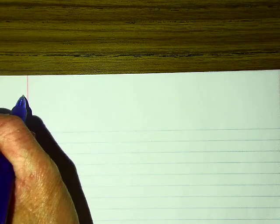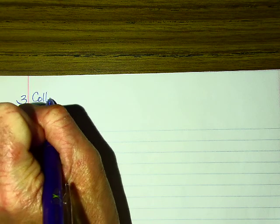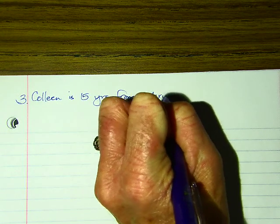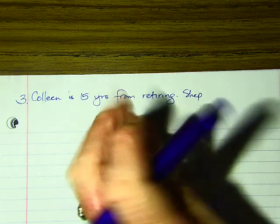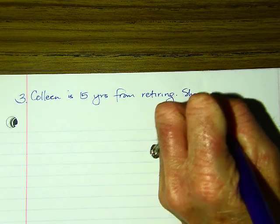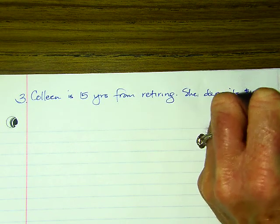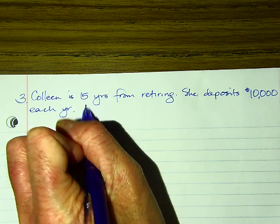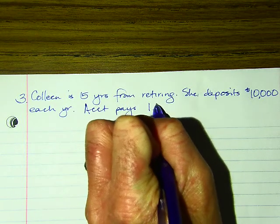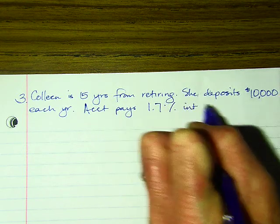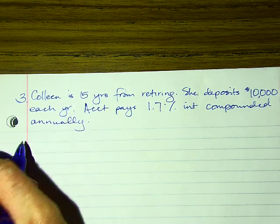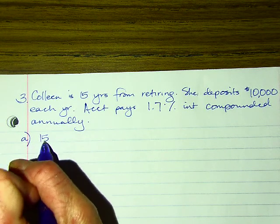Now let's talk about repeated deposits. Colleen is 15 years from retiring. She deposits $10,000 each year. The account pays 1.7% interest compounded annually. Part A: how much is in the account in 15 years?